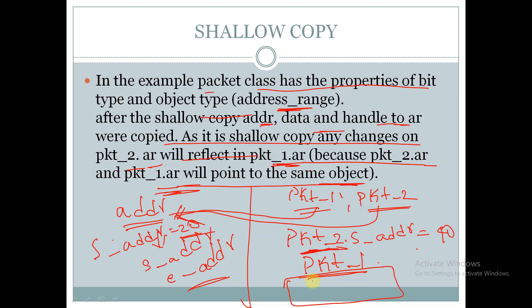So s_addr will be changed to 40 in the pkt_one object also. Any changes made by the pkt_two handle will be reflected in pkt_one as well. This is the disadvantage of shallow copy. Thank you for watching this video.